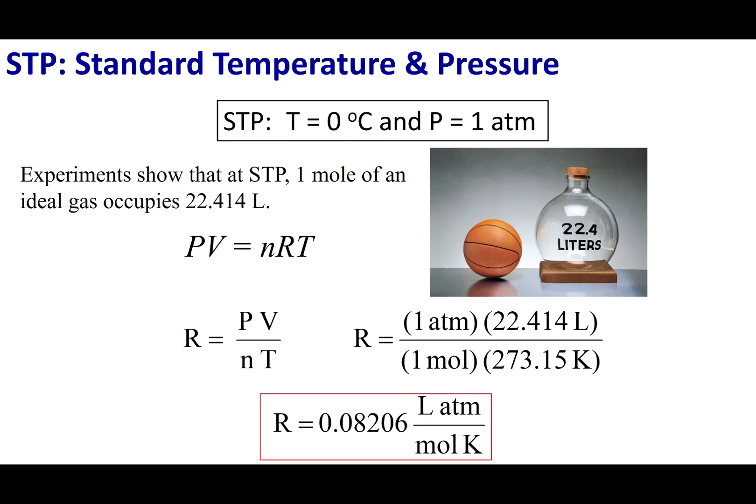So how do we figure out what R is? Well, we do what all chemists like to do, and that is run an experiment. I know PV equals nRT. I can rearrange this equation by dividing both sides by nT. So then I get R equals PV over nT. So all I have to do is have a certain pressure, temperature, number of moles, and if I measure the volume, I can evaluate what R is. We can go into lab and put a gas under standard temperature and pressure, or under STP conditions. STP is where I have the temperature at zero degrees Celsius, and my pressure is 1 atm.